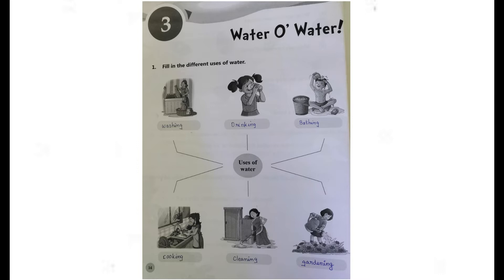Can you say? Okay, here we can write: Washing, Drinking, Bathing, Cooking, Cleaning, and Gardening.